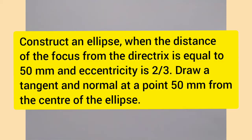Hi all. In this video, we are going to draw an ellipse using the eccentricity method. The question is: construct an ellipse when the distance of the focus from the directrix is equal to 50 mm. Eccentricity is 2 by 3. Draw a tangent and normal at a point 50 mm from the center of the ellipse.